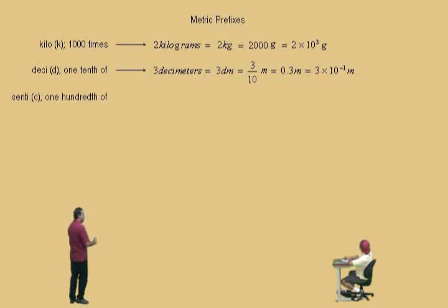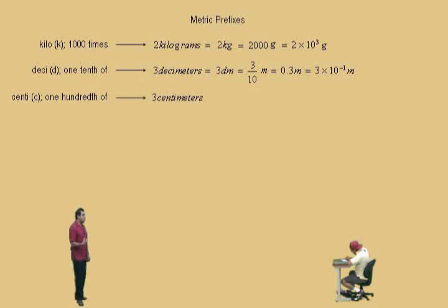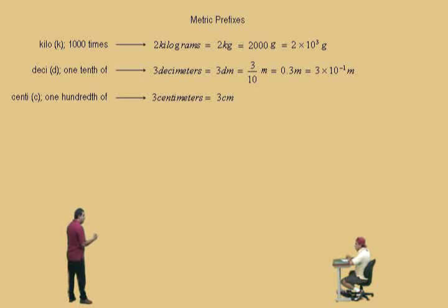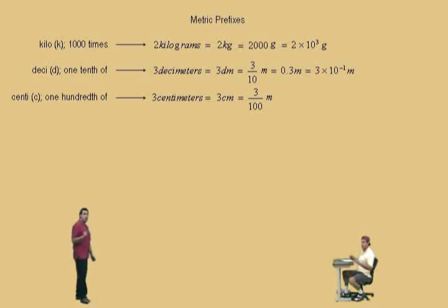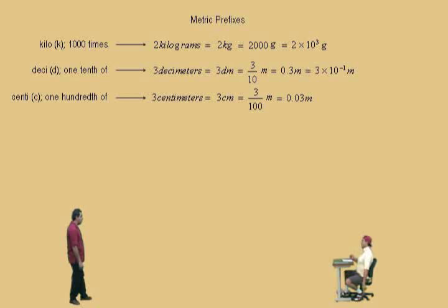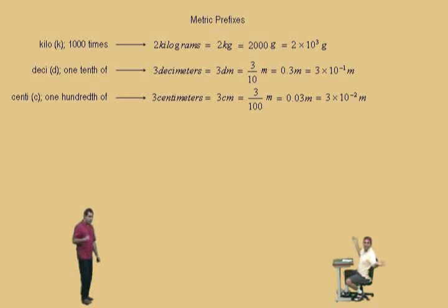Now, if we look at centi — centi means one-hundredth of. If we have 3 centimeters, abbreviated 3 cm, that's three-hundredths of a meter, because centi means a hundredth of and you have 3 of them. In decimal representation, three-hundredths is written as 0.03. And in scientific notation, that's 3 times 10 to the negative 2 meters.